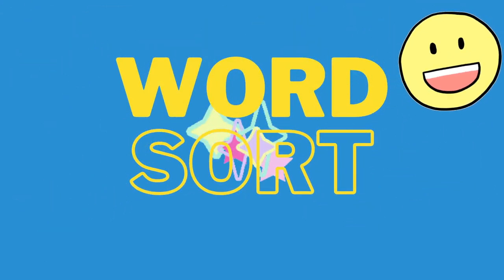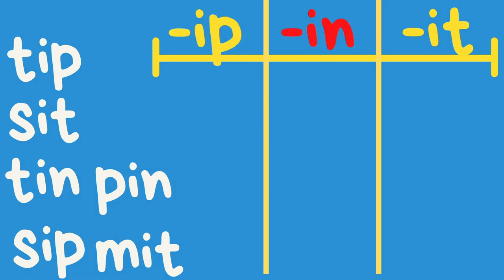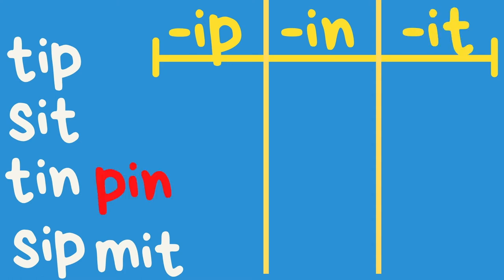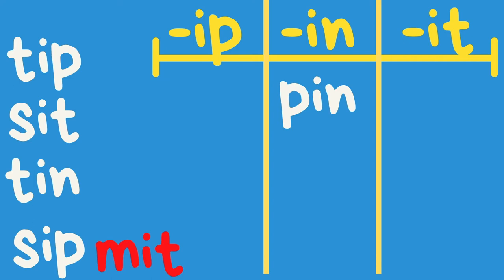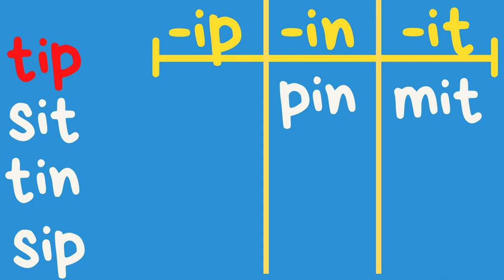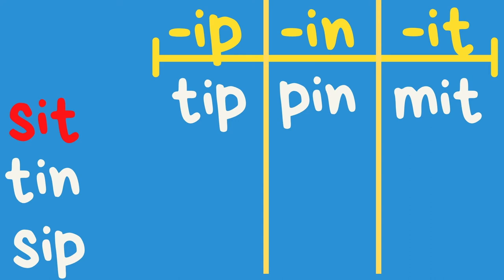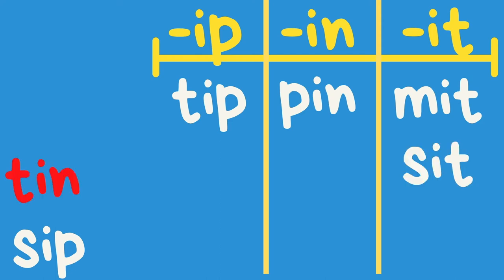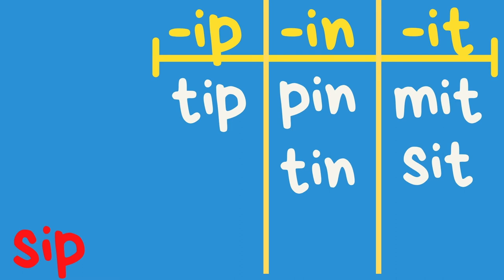Now we're going to sort the words we read. Ip. In. It. What ending does pin have? In. What ending does mit have? It. What ending does tip have? Ip. What ending does sit have? It. What ending does tin have? In. What ending does sip have? Ip.